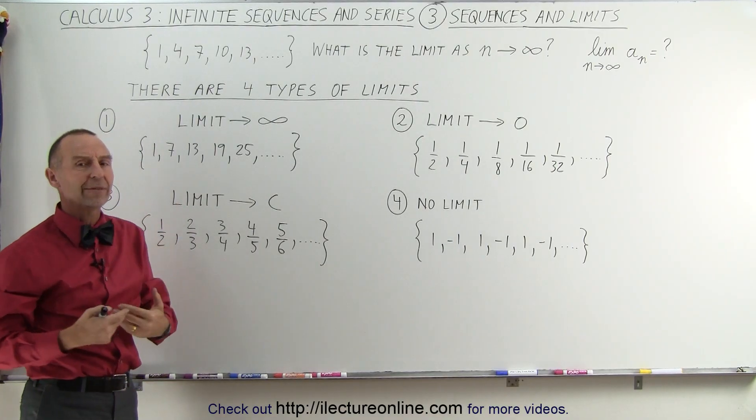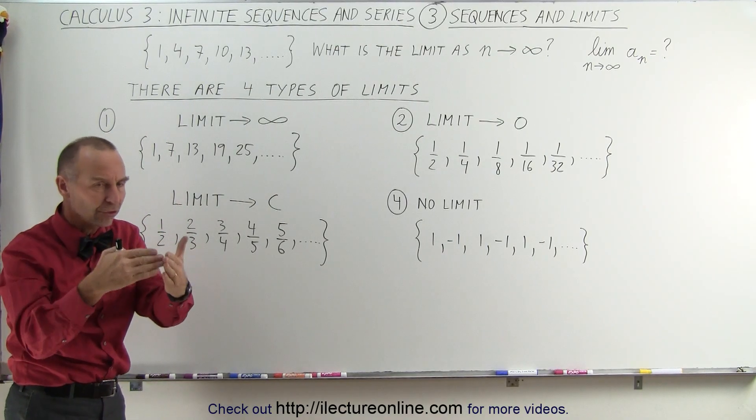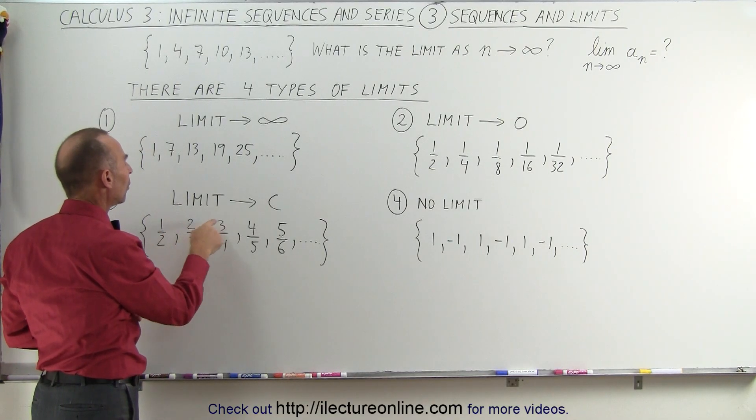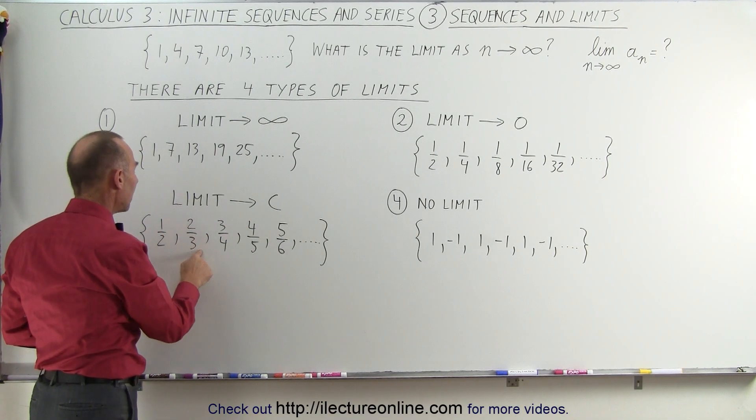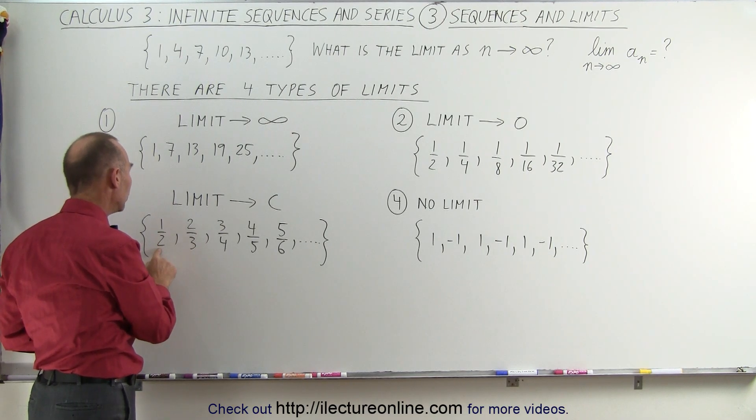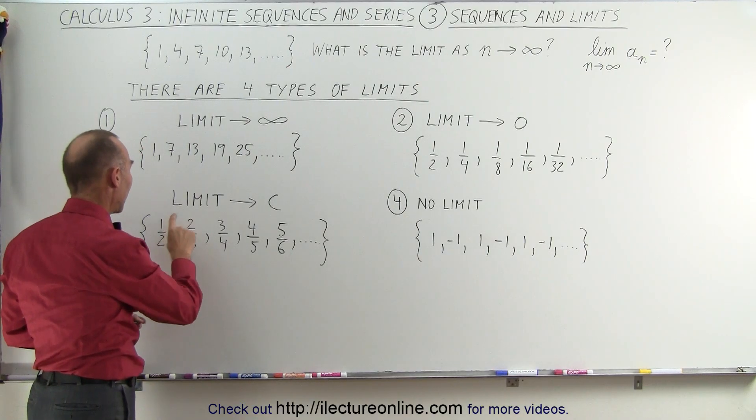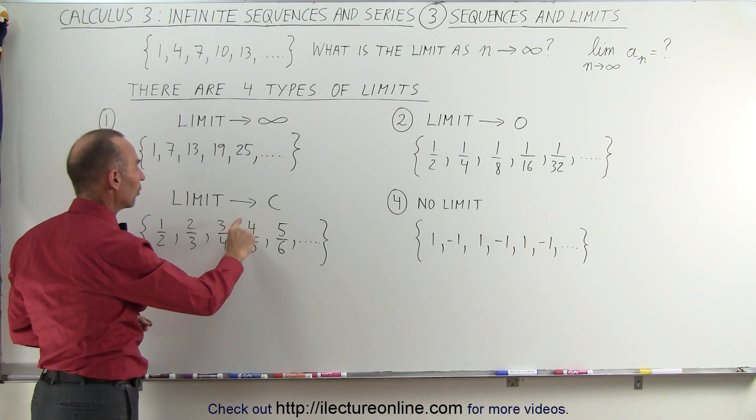Sometimes the limit of a sequence becomes a constant, or converges down to a constant. Here, you can see that the numerator increases by one, and so does the denominator—except the denominator started as a two and the numerator started as a one. So you can see that this is one-half, this is two-thirds, this is three-quarters, this is four-fifths.